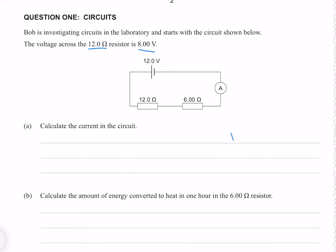For this we will need Ohm's law, which we can solve for current by dividing both sides by resistance. We know the voltage is 12 volts, and the resistance, because this is a series circuit, is going to be the 12 and 6 ohms summed together. Putting our numbers in gives me 0.667 amps to three significant figures.